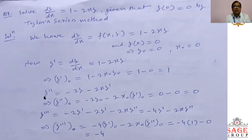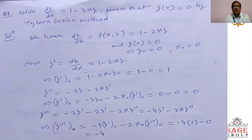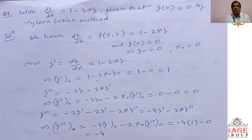The initial condition given is x-naught = 0 and y-naught = 0. We have dy/dx = f(x, y) = 1 − 2xy, with initial condition y-naught = 0, i.e., at x = x-naught, y-naught = 0. Now y-prime = dy/dx = 1 − 2xy. At x = x-naught, y-prime(naught) = 1 − 2·x-naught·y-naught = 1 − 0 = 1. Again, differentiating y-prime with respect to x, we find y-double-dash.